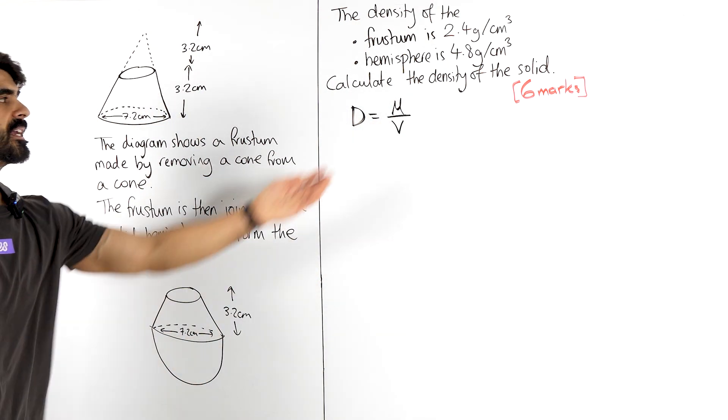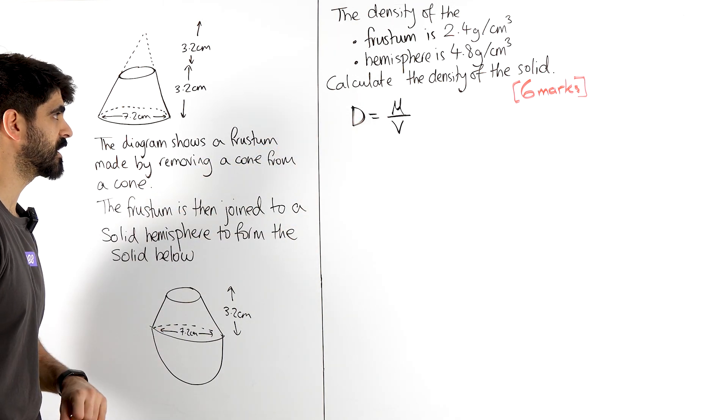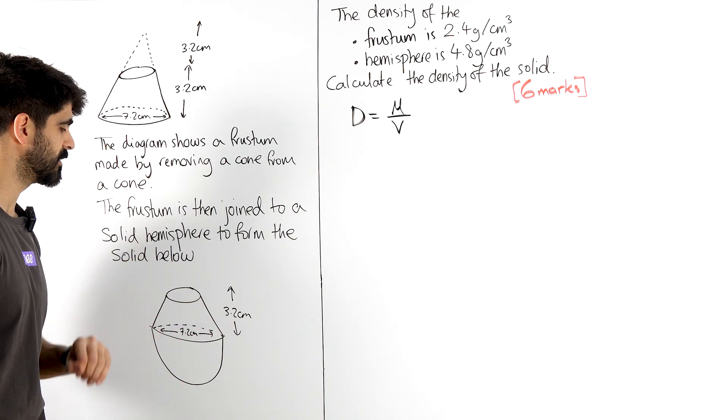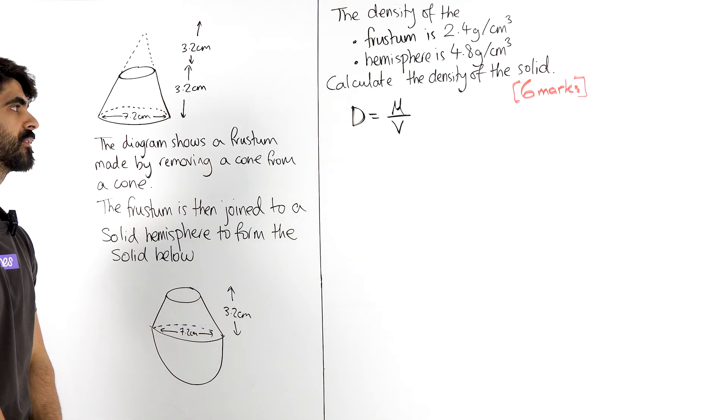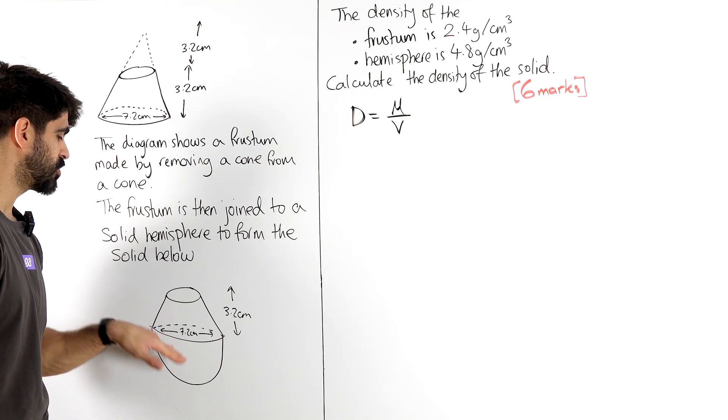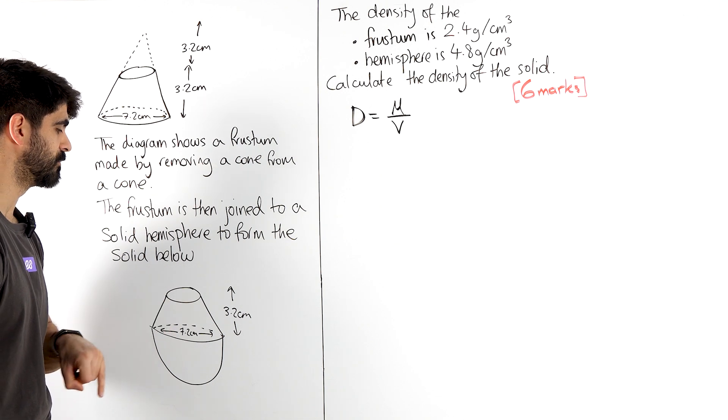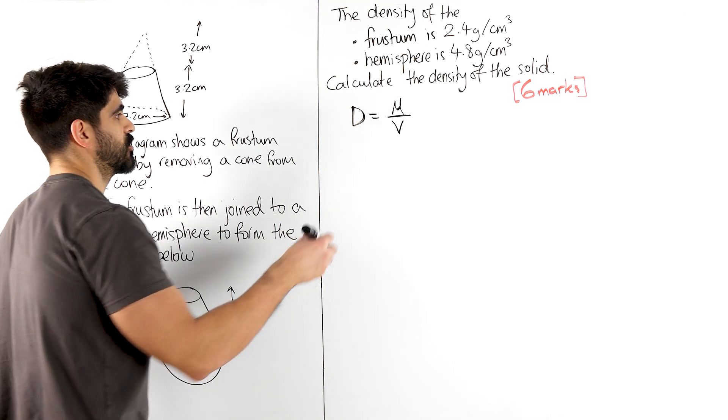Now if you want to know the density of this object, I need to know its total mass and its total volume. That means we need to focus on each shape individually and say okay, for this frustum what is its mass and what is its volume. Let's focus on each thing separately. So here's my frustum.